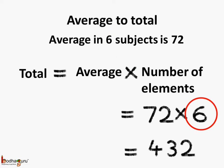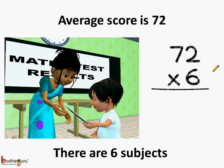This is how you calculate the total if you know the average and the number of elements. So we see by multiplying the average with the number of elements, which is 6 subjects here, we got the total which is 432 marks.